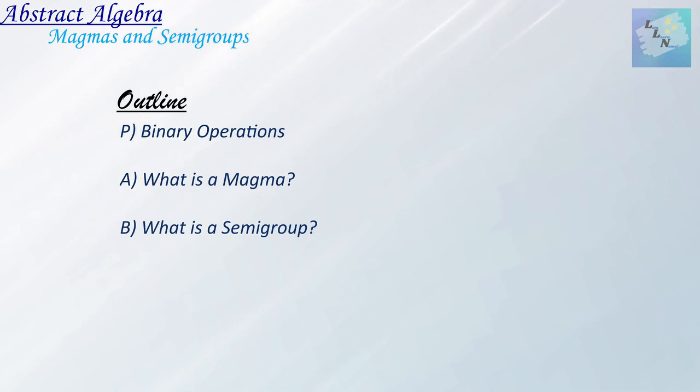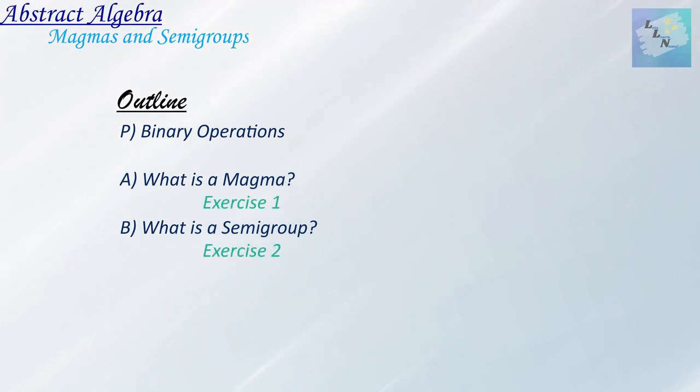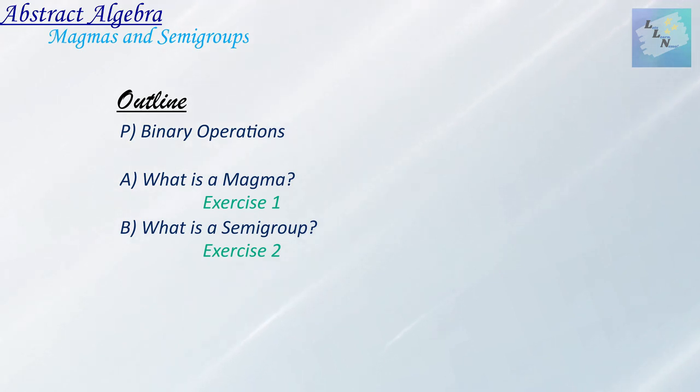Hello there! In this video we're going to continue our exploration of abstract algebra and begin our discussion of algebraic structures. In case you are not already familiar with binary operations, feel free to check out that video before exploring this one. The two algebraic structures that we will discuss in this video are magmas and semigroups. Throughout our discussion we're going to give two examples for you to measure your understanding. Feel free to drop your answers in the comment and discussion section below. Let's get started.